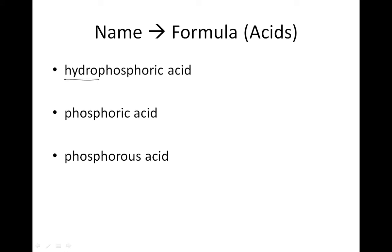Name to formula. Hydrophosphoric acid. Hydro ic acid means it comes from ide. Ide means no oxygen. So P. P from the periodic table is negative 3. Now all acids start with an H. Hello, I'm an acid. So H positive and P negative 3 would become H3P. Phosphoric acid, no hydro. Ick, I ate it, means it comes from phosphate. Phosphate is PO4 negative 3. Hello, I'm an acid. Hi, I'm phosphate. And I put them together and I get H3PO4.